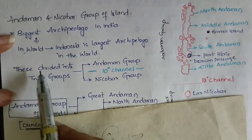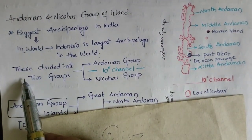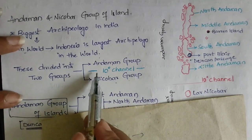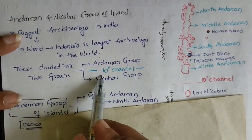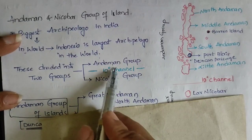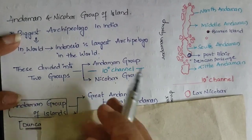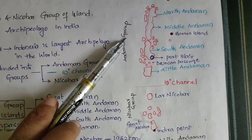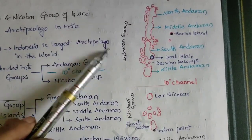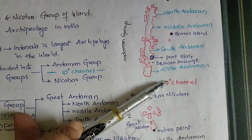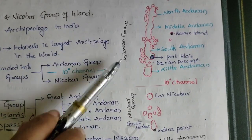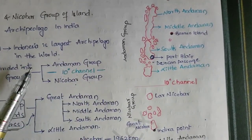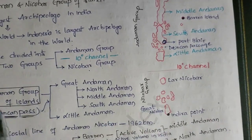Andaman and Nicobar was divided into two groups — Andaman and Nicobar islands — and it was divided by the 10-degree channel. If you can see this map, this is your Andaman group and this is the Nicobar group, divided by the 10-degree channel.